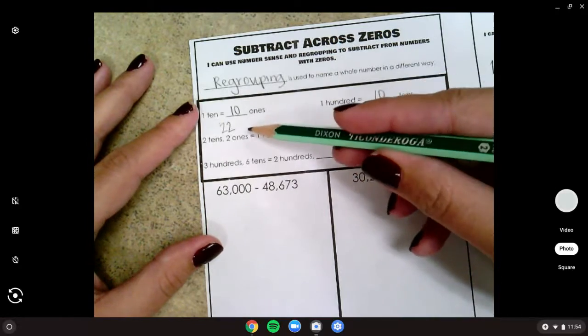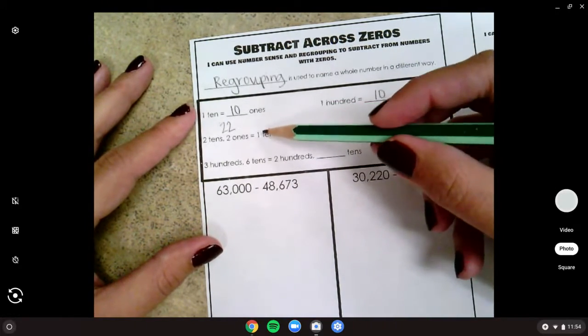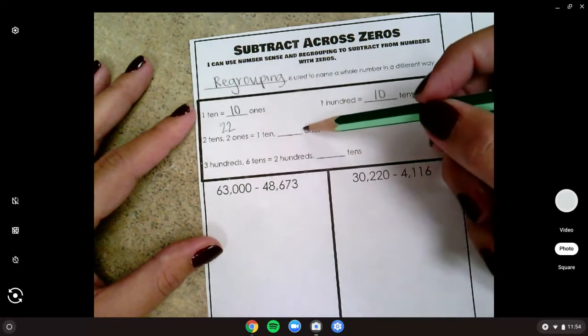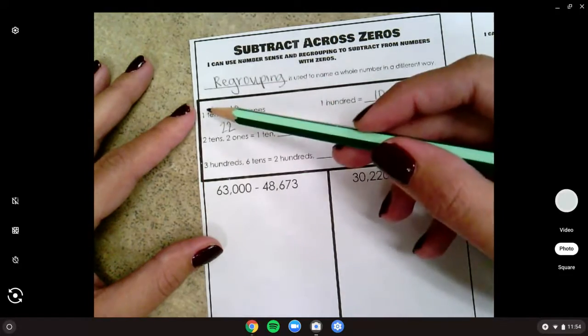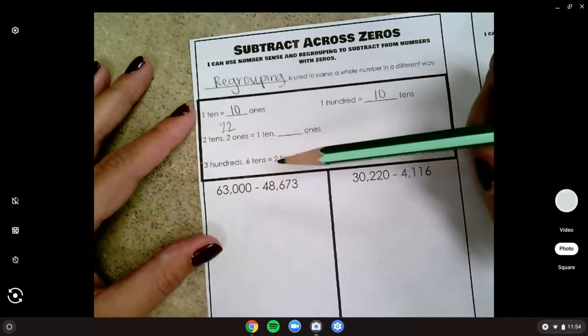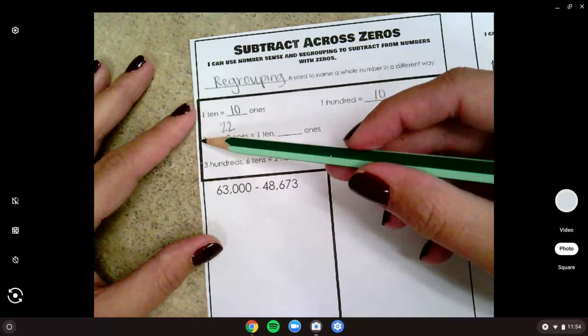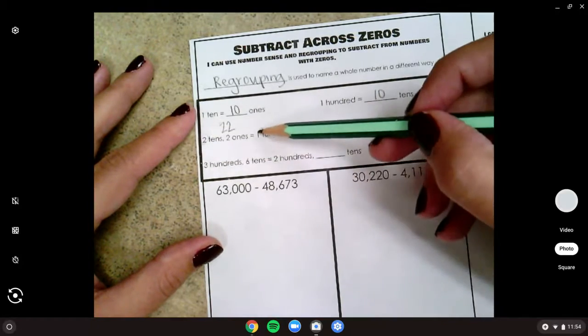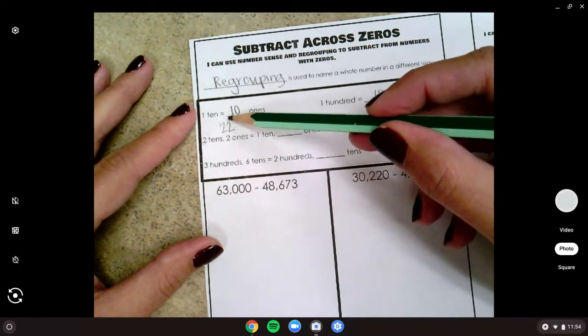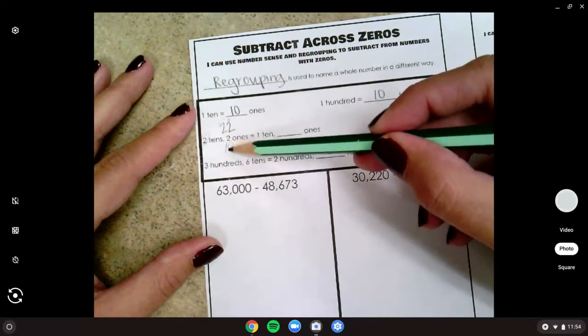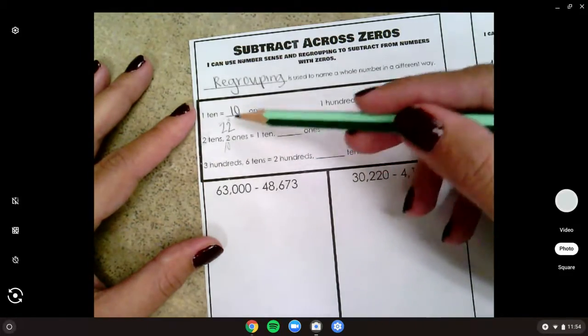So I'm trying to think, what could this be the same as? One ten and how many ones? Well, I knew one ten was the same as ten ones. So if I take one of my tens and give it to my ones, I add ten ones to my two to make twelve ones.